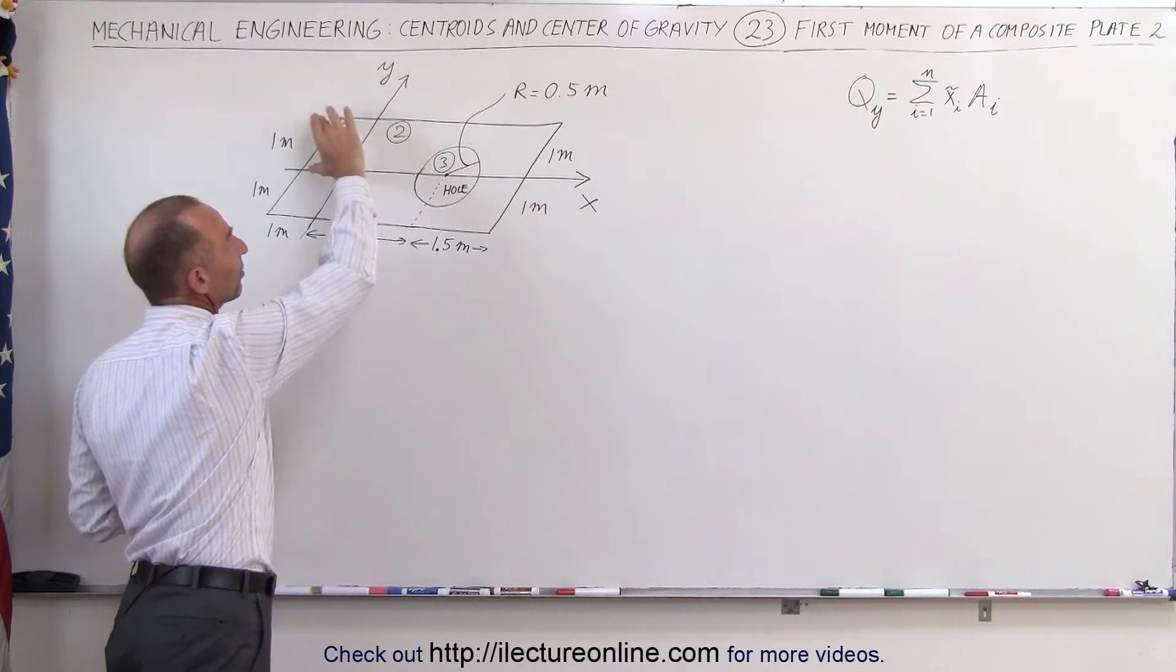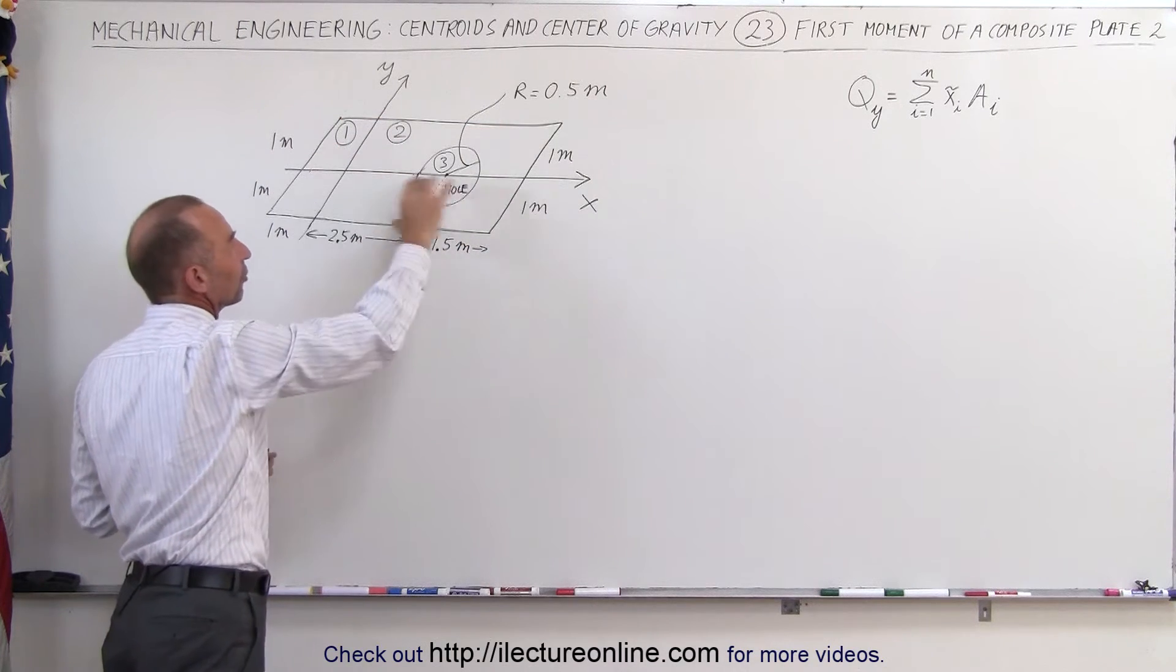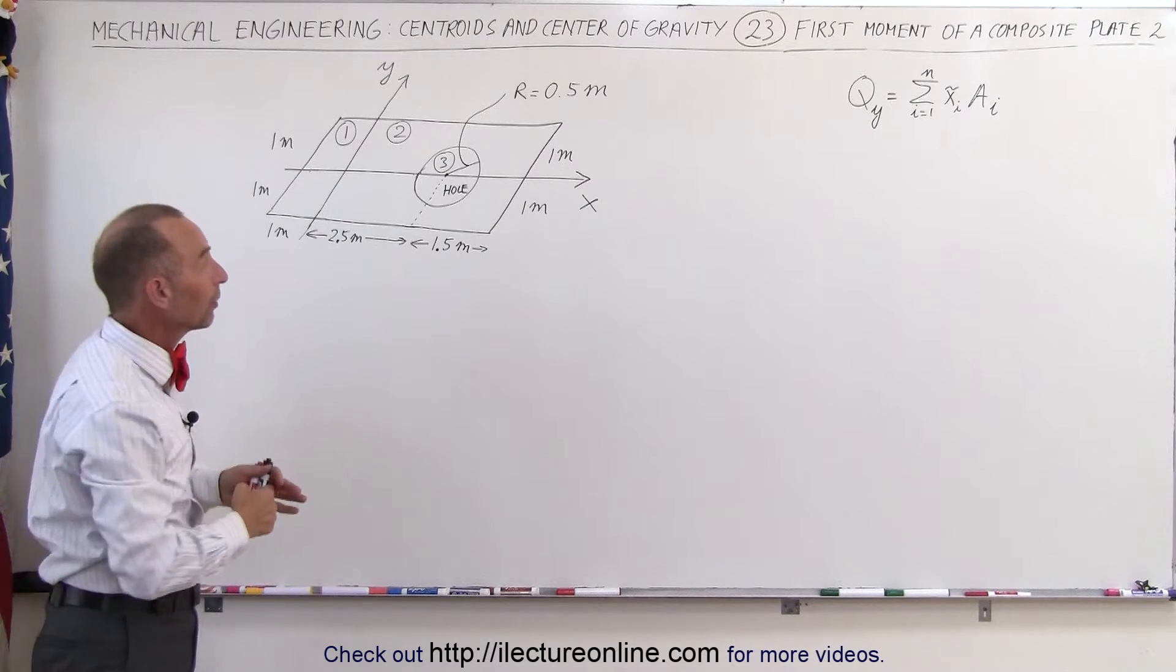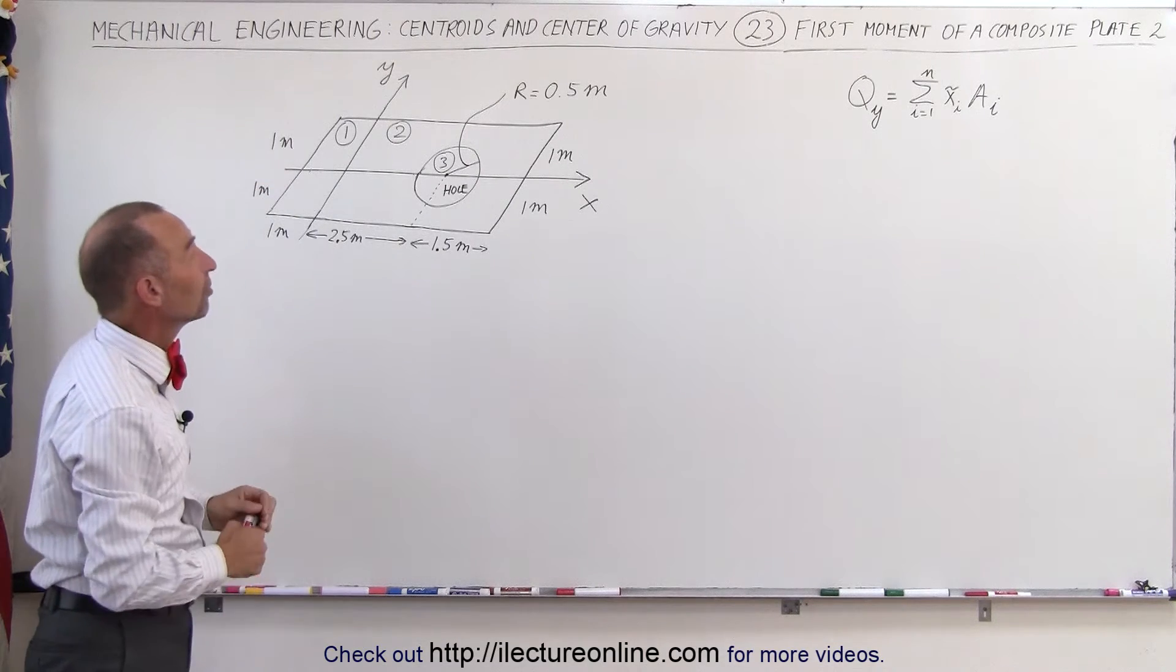Notice along the x-axis we have the same amount of mass on one side versus the other side, so the moment about the first moment about the x-axis should be zero.